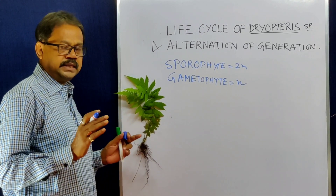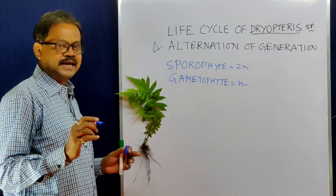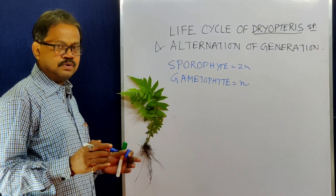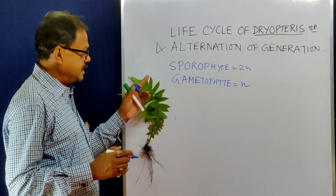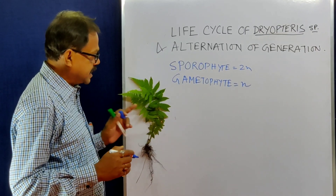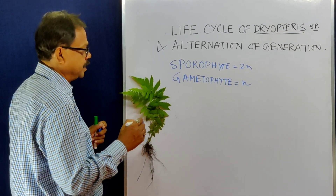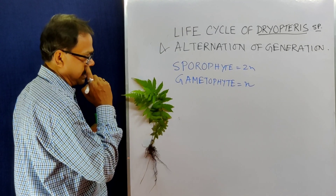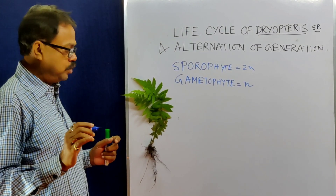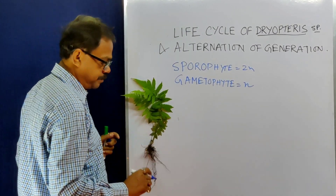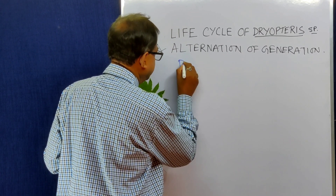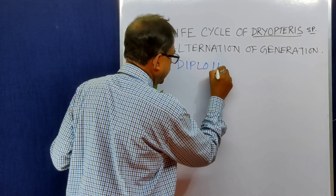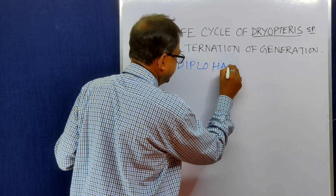There are three types of alternation of generation found in plants. In the case of Dryopteris, we get a diplohaplontic phase — diplohaplontic phase.